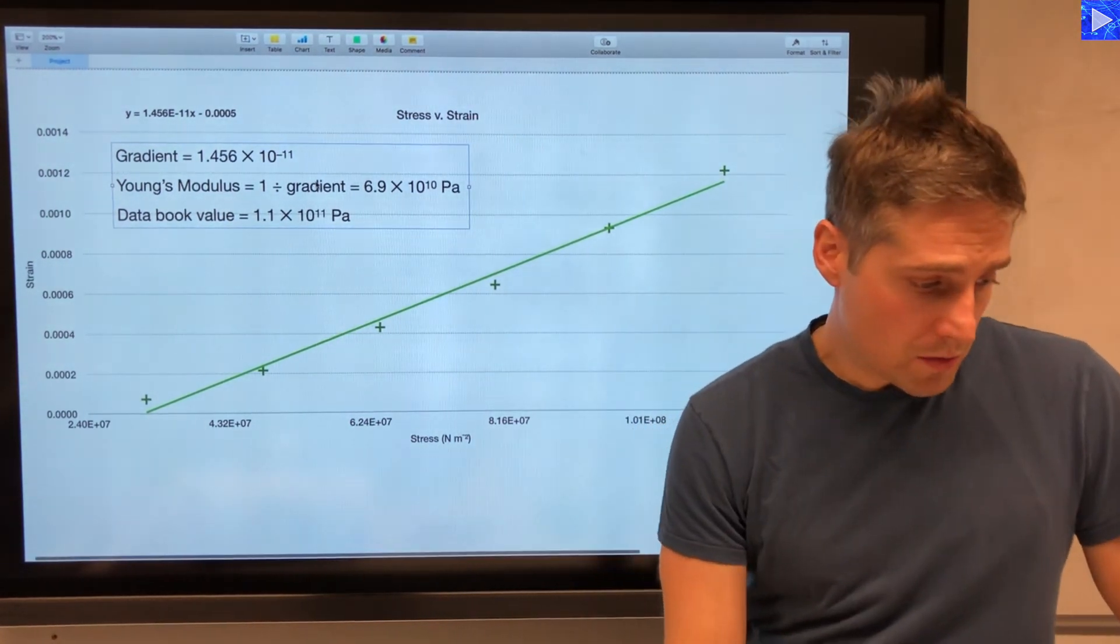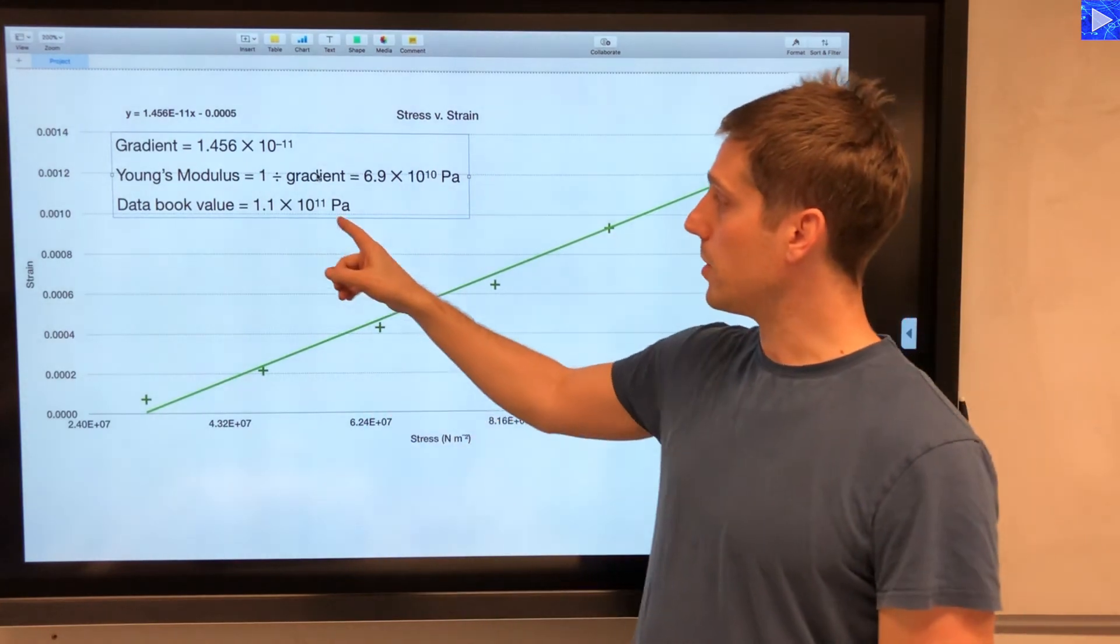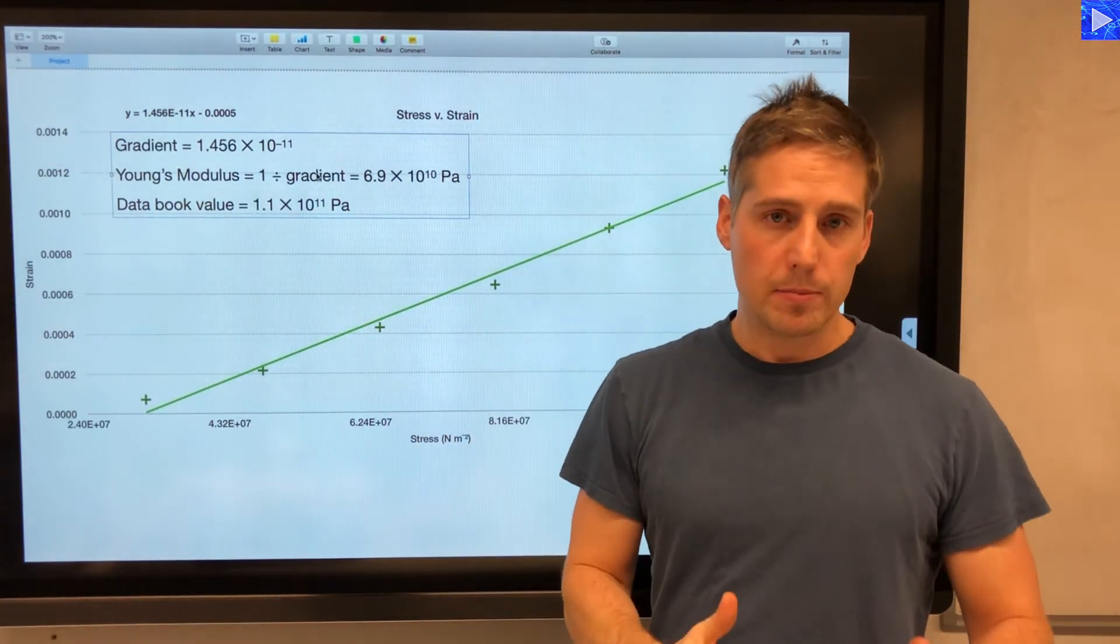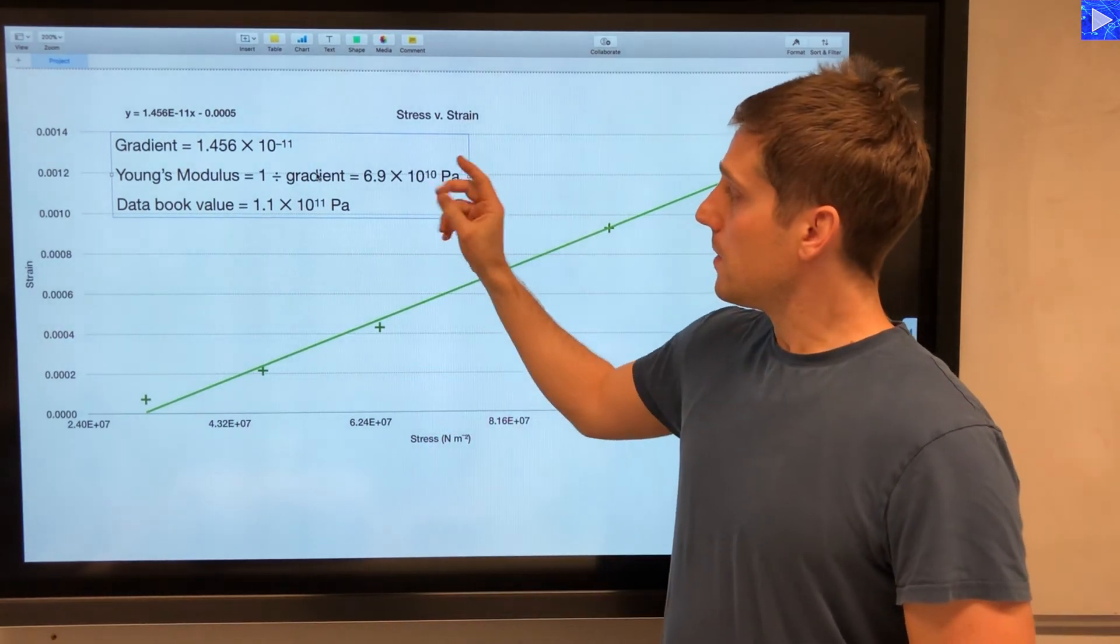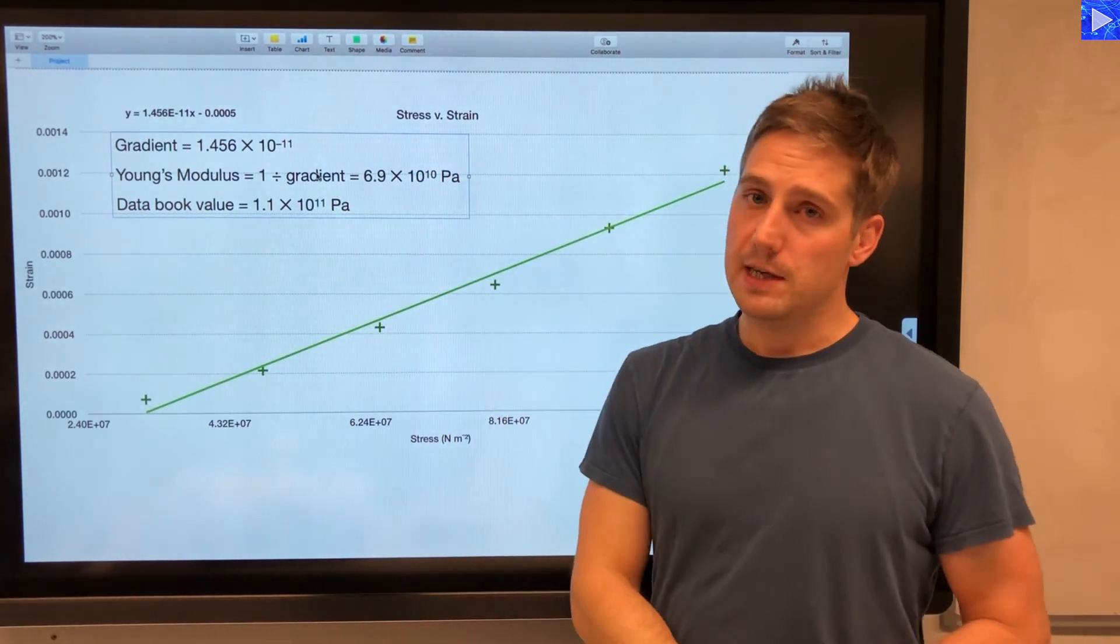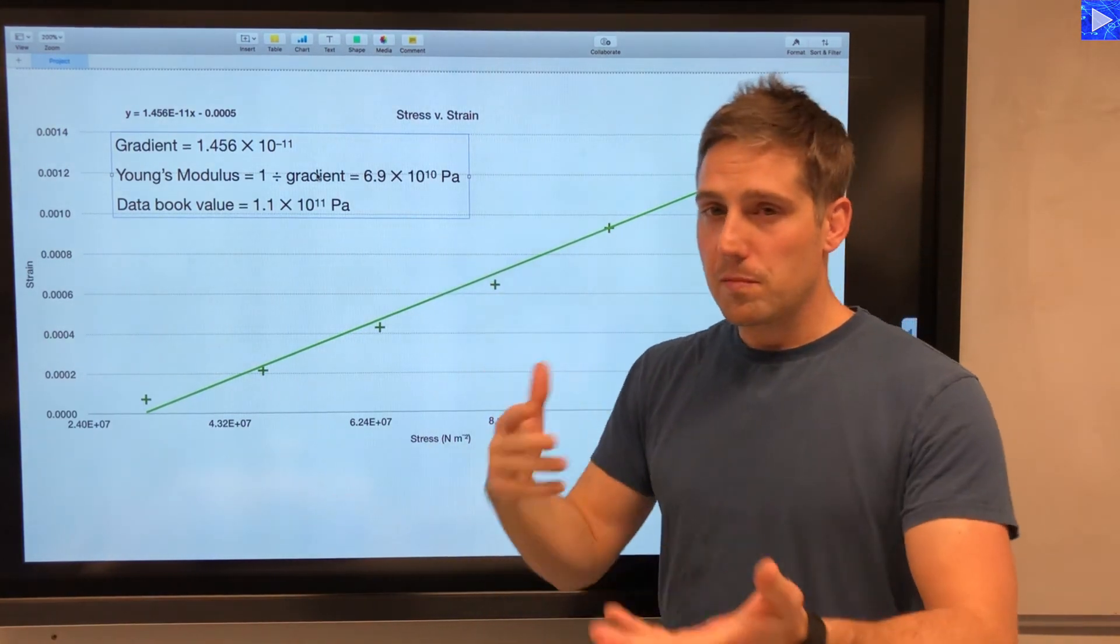The data book value was 1.1 times 10 to the 11 pascals. So you could work out a percentage difference for that.